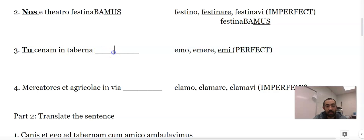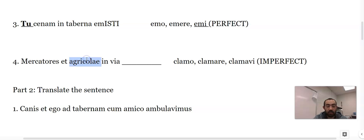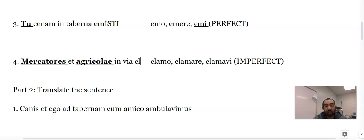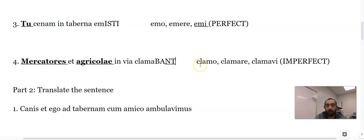And mercatores et agricolae, here's our subjects - it's more than one, it's merchants and the farmers. They were shouting, it's just like festino but a different ending. Clamo - and that's an imperfect, so it comes from that part.